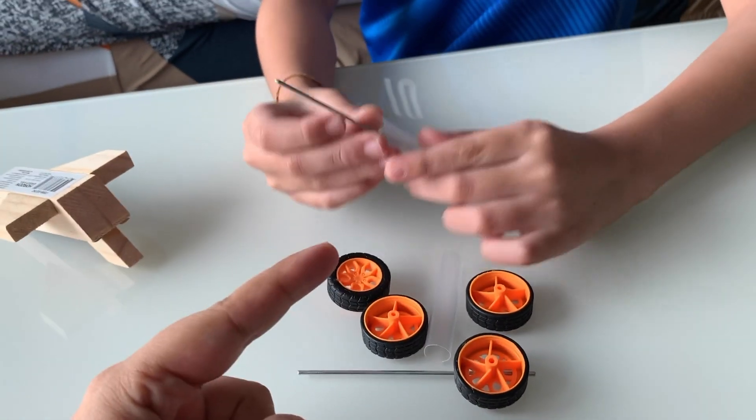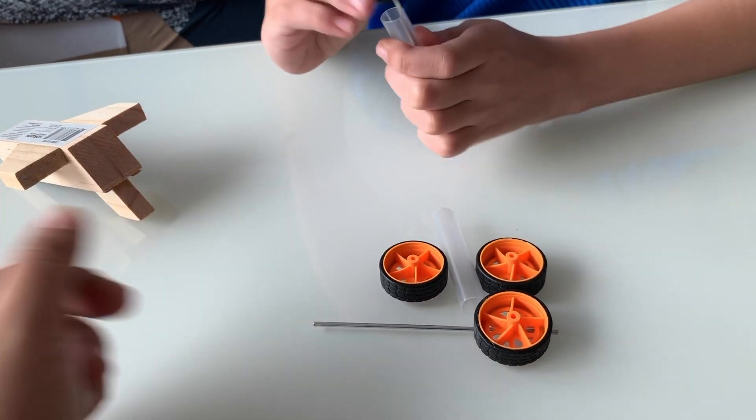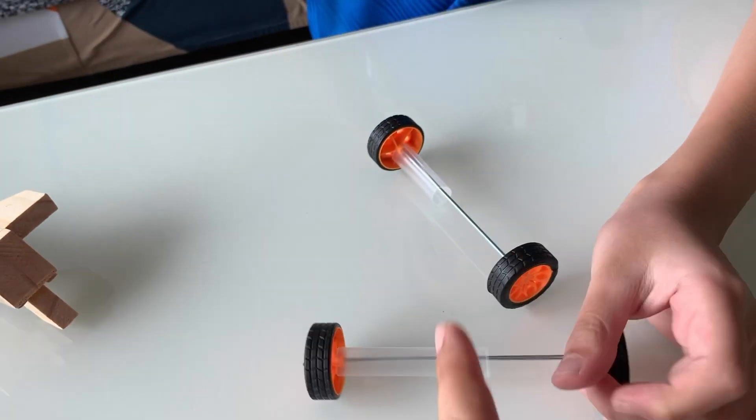So we have taken a strap and this is the axle. We are connecting the wheels. These we got with our robotics kit. The two pairs of wheels are ready.